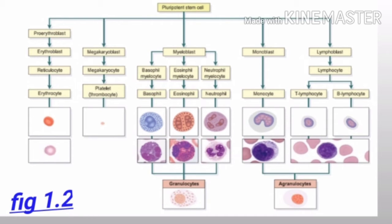The proerythroblast is further divided into erythroblast, reticulocyte, and erythrocyte. The megakaryoblast is further divided into megakaryocyte, then platelet and thrombocyte.